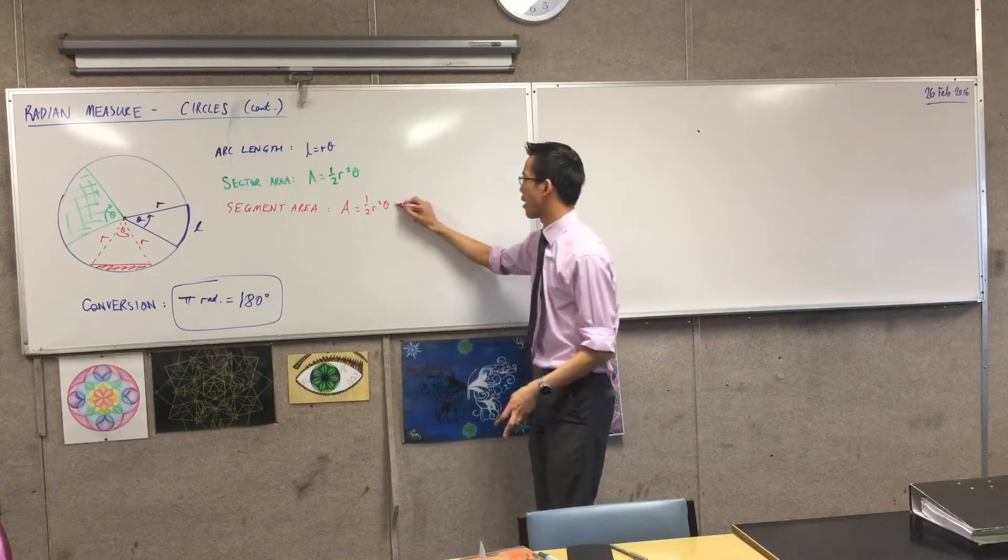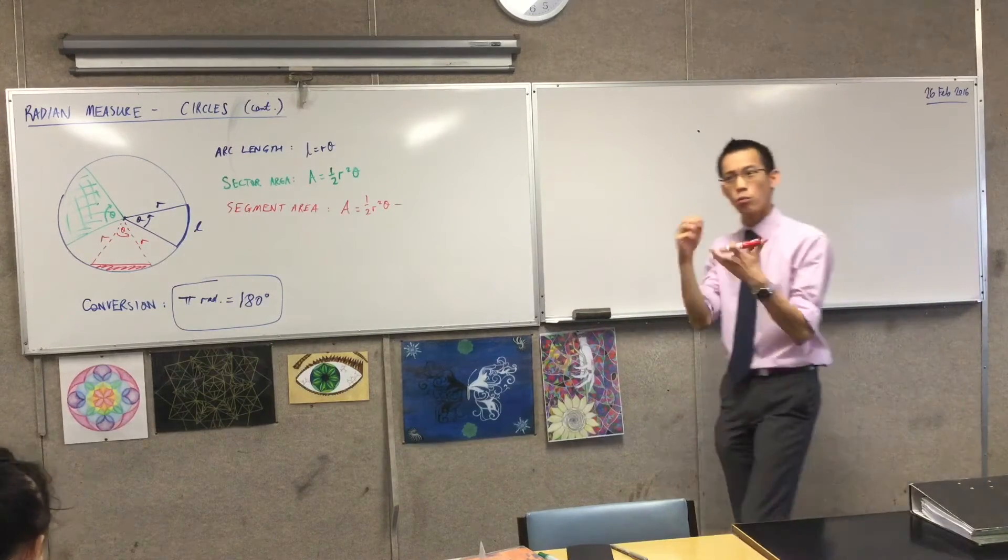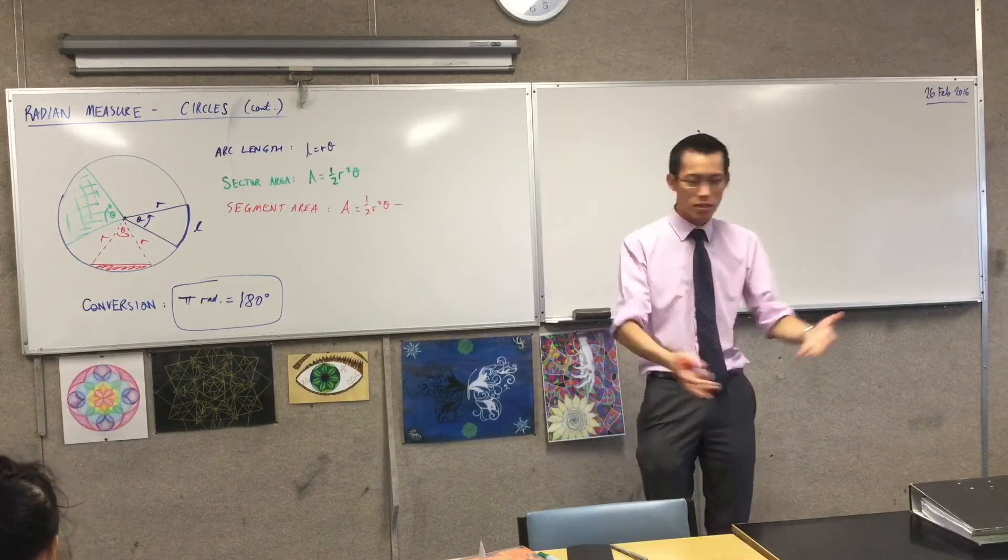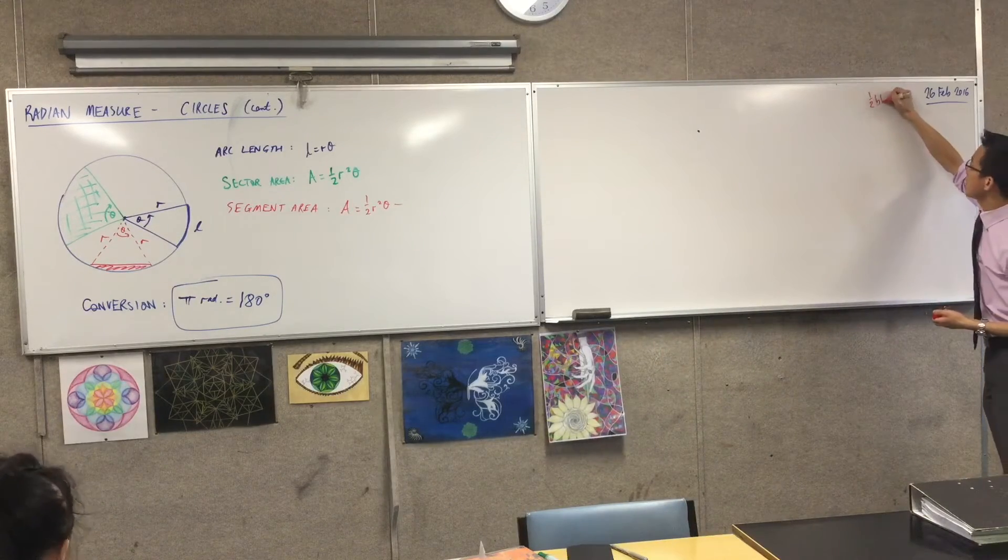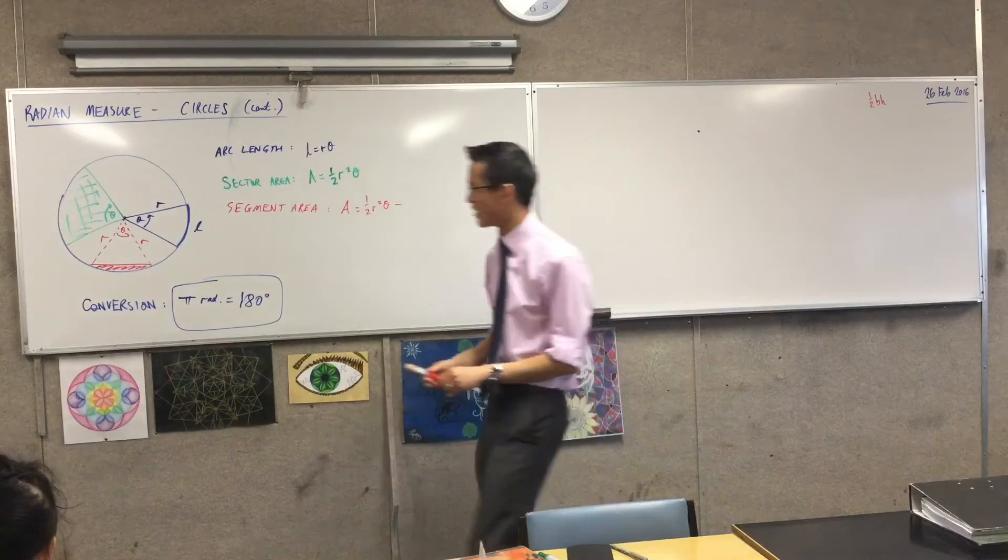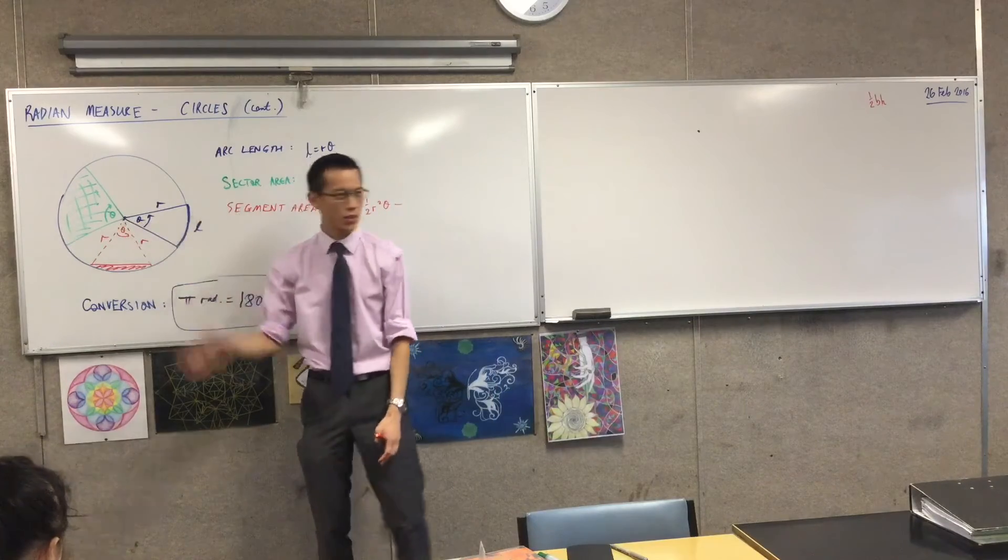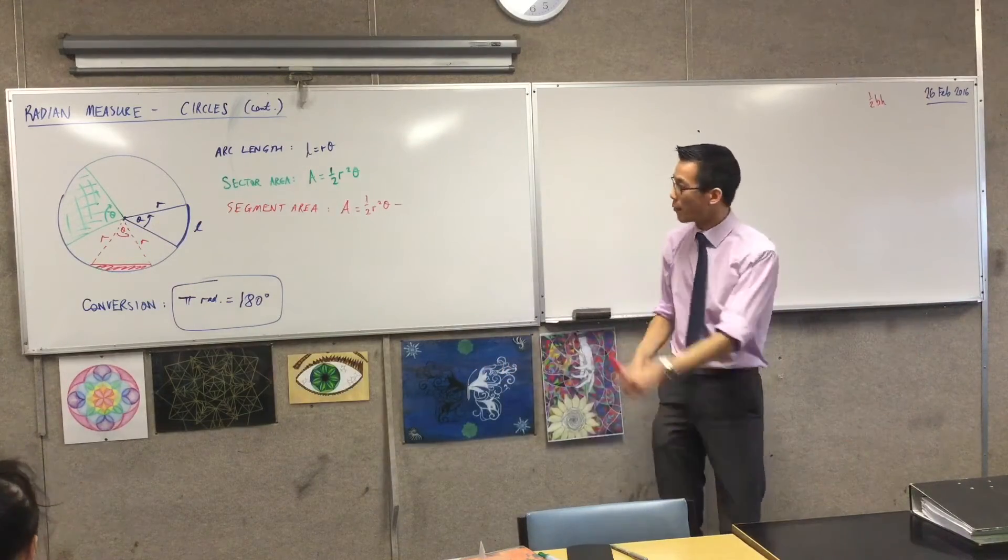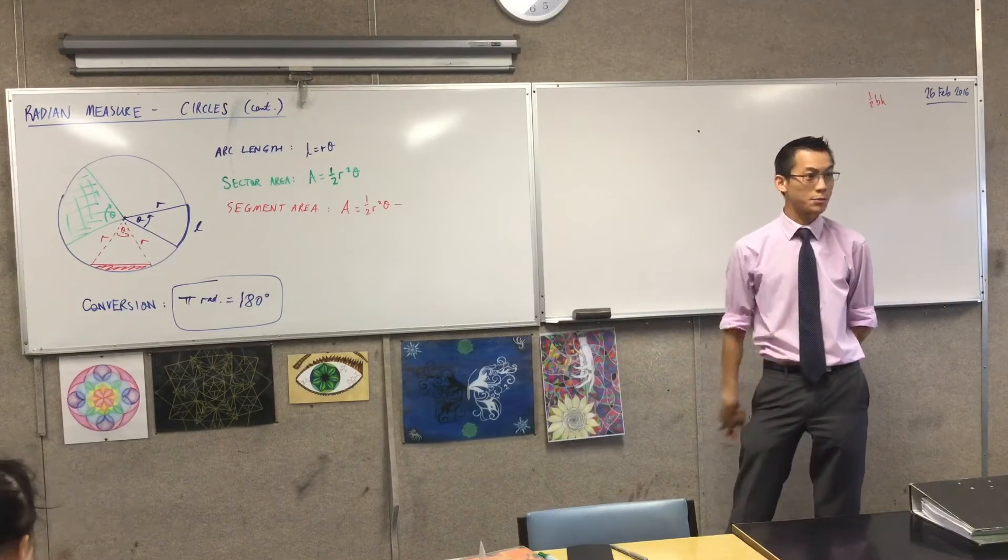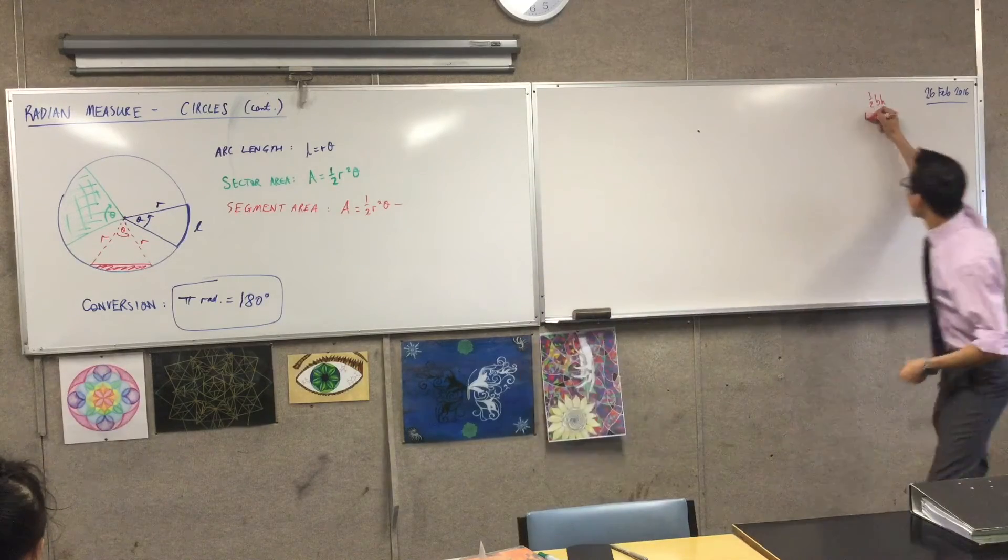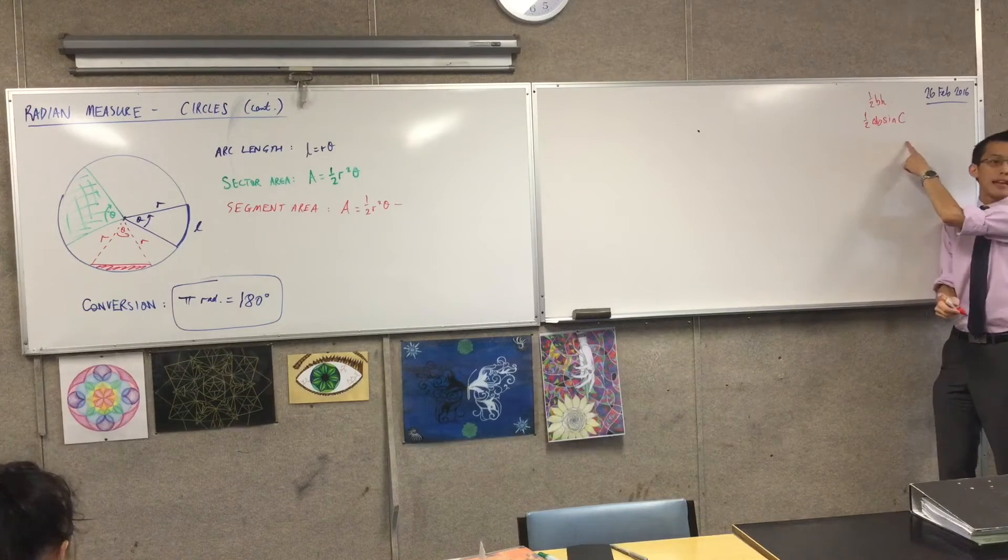So I'm going to call this segment area. Like we just said, you start with the sector, which we've just said is half r squared theta. But then what you want to do is take away that triangle. Now, we know a few different ways to work out the area of a triangle. The best way depends kind of on what information that you have. What's the normal, what's the first formula for the area of a triangle that you learned? Half base times height, right? Now, this is great in cases where you have a base and a perpendicular height. I don't have a perpendicular height, certainly, unless I've got some 90 degree angles in there which are sort of larger. So what's our other way of working out the area of a triangle? Half a b sine c.